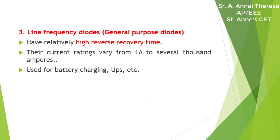The third type is line frequency diodes or general purpose diodes. The on-state voltage is designed to be as low as possible; as a consequence, they have large TRR, which is acceptable for line frequency applications. These diodes are available with blocking voltage ratings of several kilovolts and current ratings of several kilo amperes. They can be connected in series and parallel to satisfy any voltage and current requirement, and are used for battery charging, UPS, etc.